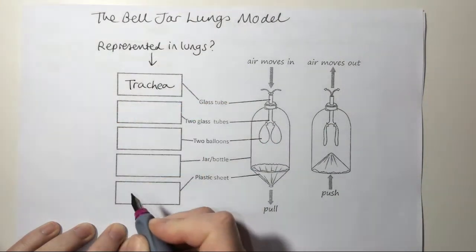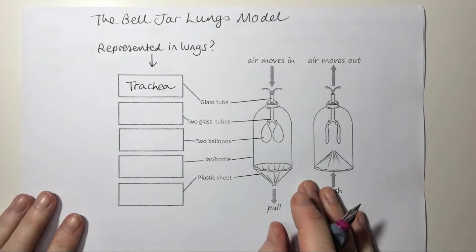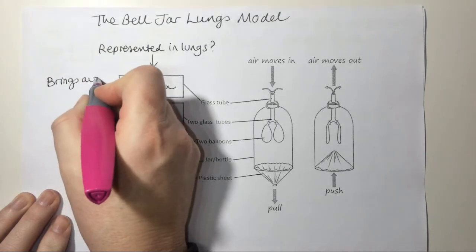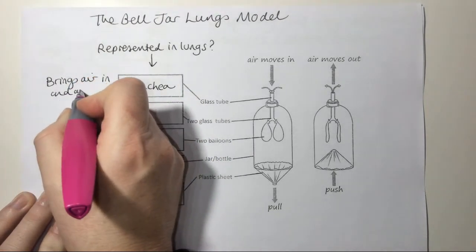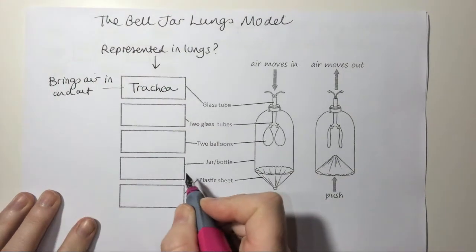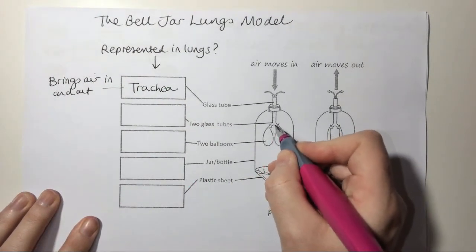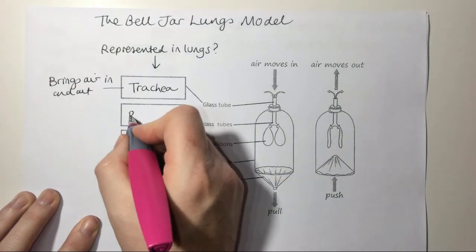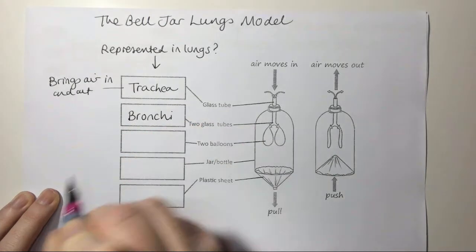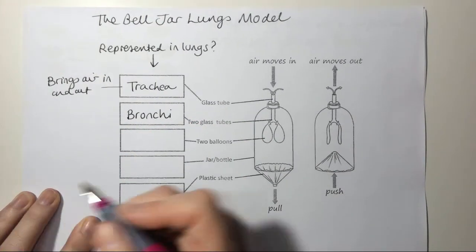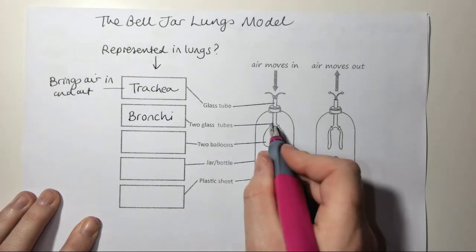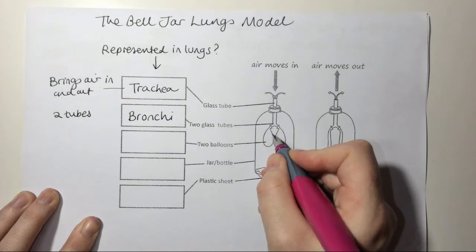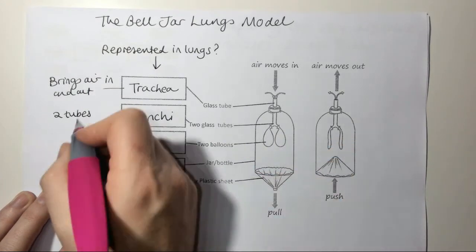Remember, the trachea is the windpipe. And how is it good at representing the trachea? Well, it brings the air in and out. The next part: we've got our two glass tubes branching off here, and those two glass tubes branching off are called the bronchi. That's quite good because the bronchi are two tubes, and here we've got two tubes. Those tubes lead to the lungs, and these balloons are representing the lungs.